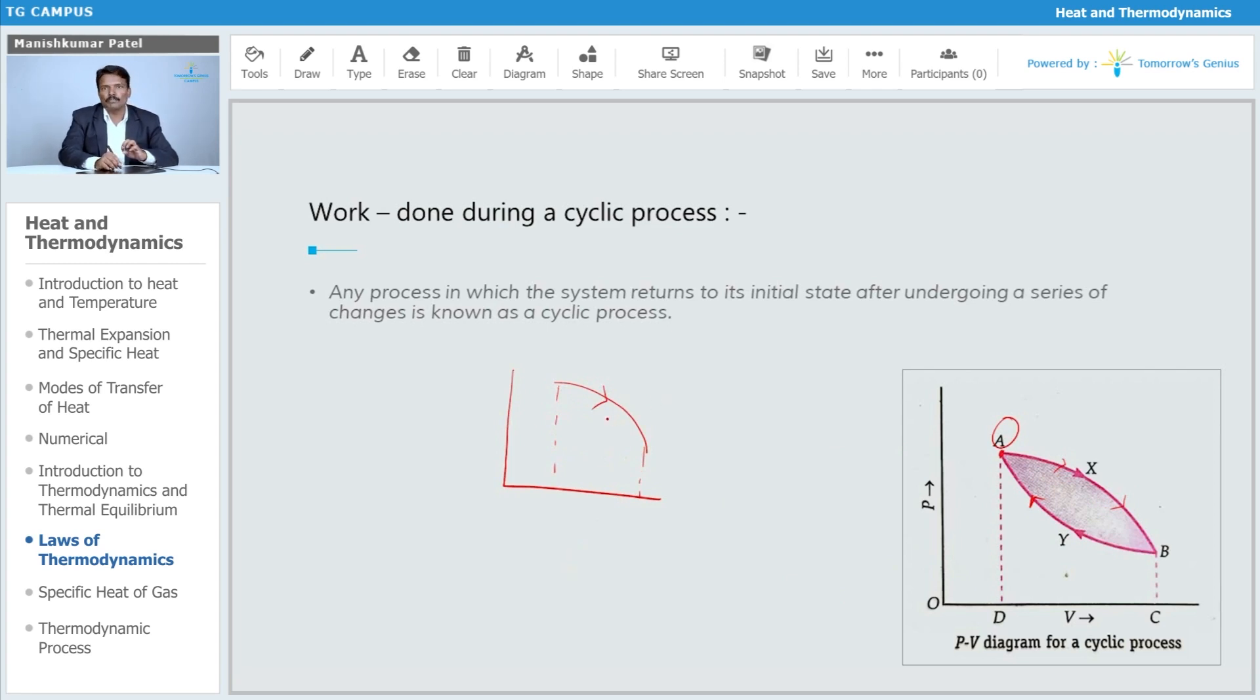You have to take it as positive if it is clockwise. If it is moving from B to A, that is anti-clockwise.